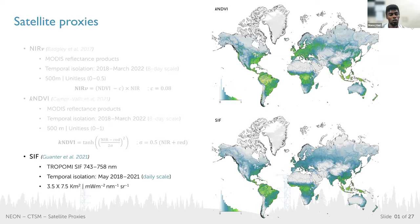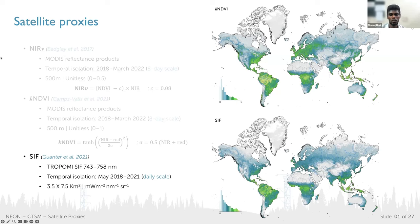The other proxy, considered much closer to GPP, is SIF, solar-induced fluorescence. We extracted this from TROPOMI SIF, which has higher resolution to trace SIF at the site level — a spatial extent of about 3.5 by 7.5 km², capturing SIF at a daily scale. The advantage of SIF is that it is considered a more direct proxy compared to the earlier reflectance-based proxies.